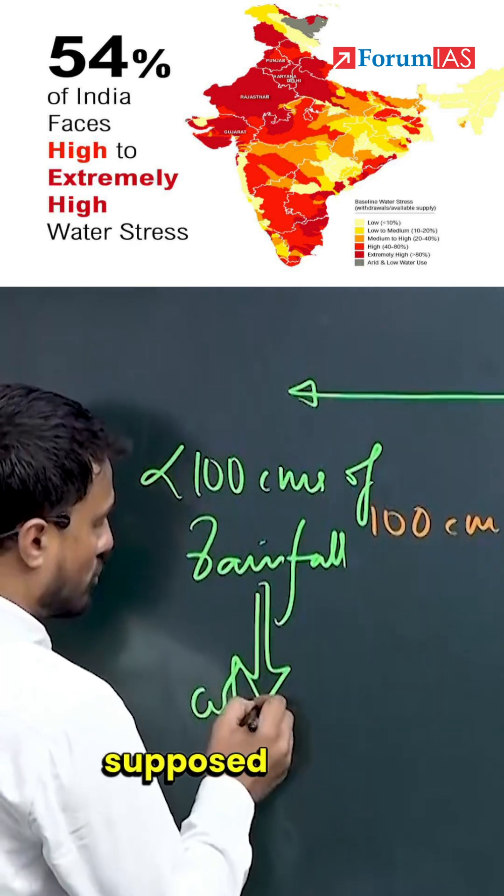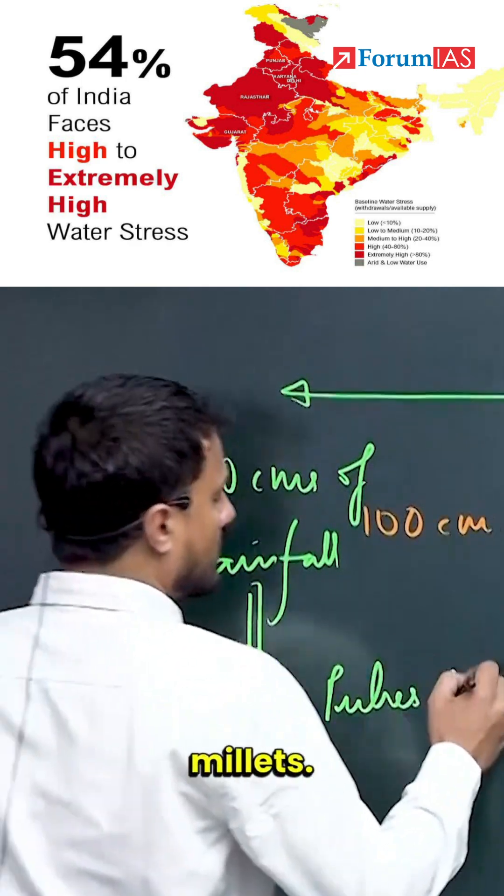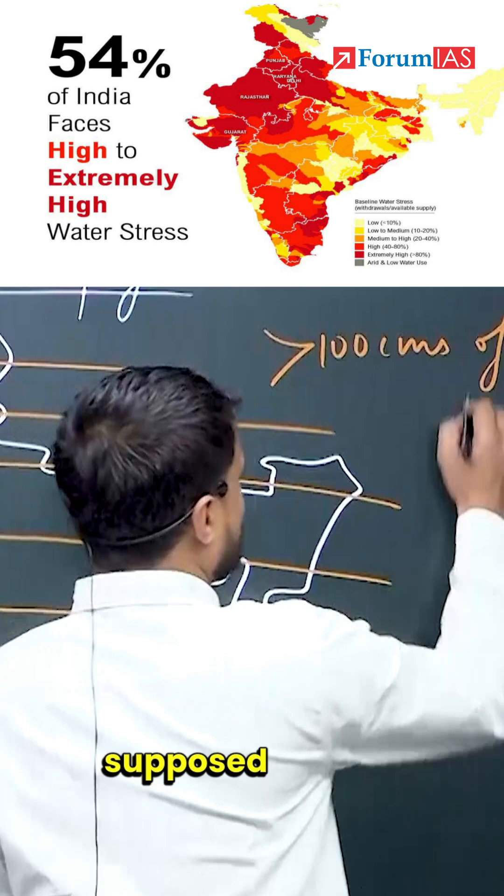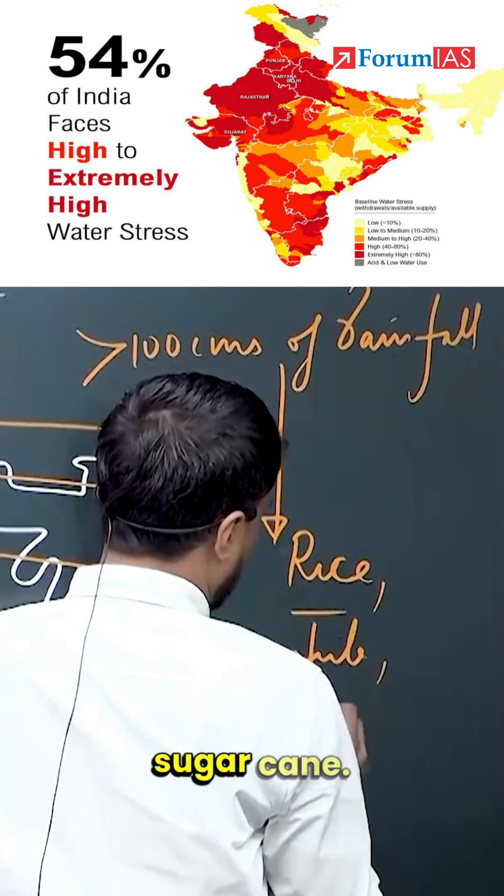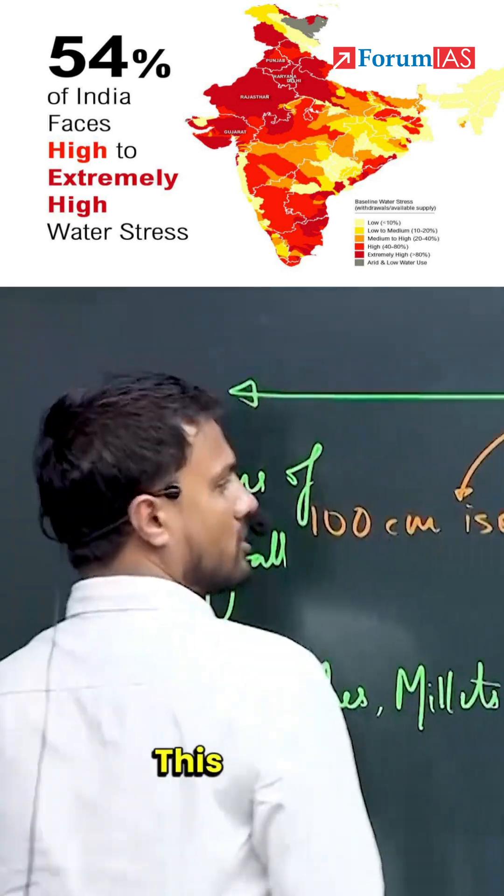What should I grow here? On the low rainfall side, I am supposed to grow wheat, pulses, and millets. Whereas on the high rainfall side, I am supposed to grow rice, jute, sugarcane, and cotton.